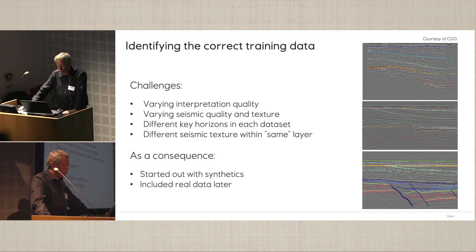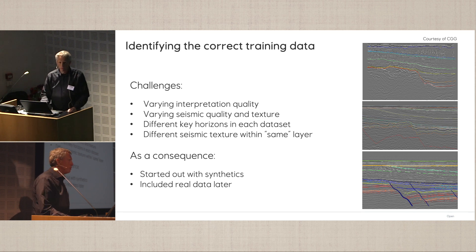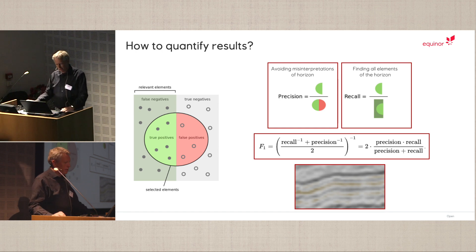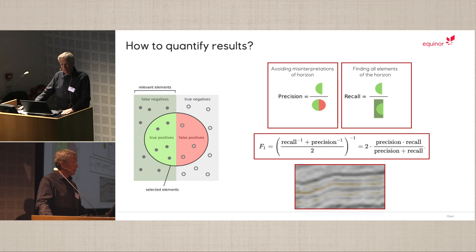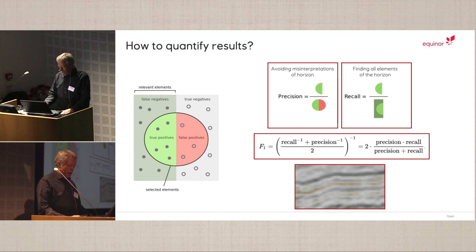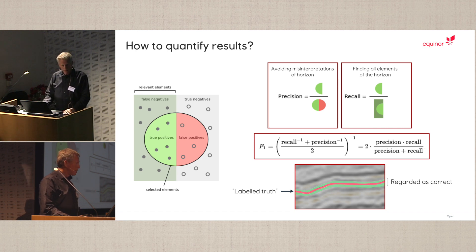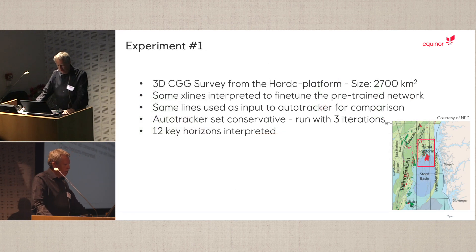Obtaining quality training data is the first headache — there is varying interpretation quality even in a superb company like Equinor, with varying subject quality in interpretation, texture, and different key horizons internally. We started out with synthetic data but quickly recognized we had to move to real data. For quantifying results, we chose precision and recall combined as the F1 score, using a window regarded by the interpreter as acceptable to determine whether a prediction is a correct answer.